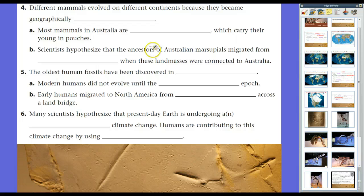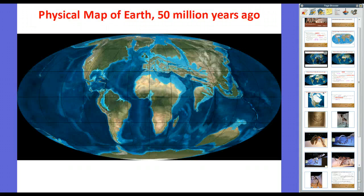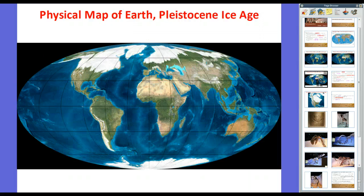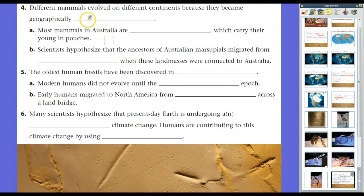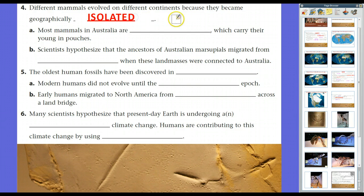Now, different mammals evolved on different continents because over time, if we look at these pictures, over time the continents separated. And so they became geologically isolated. And when organisms get isolated, they start developing very specialized evolutionary niches.